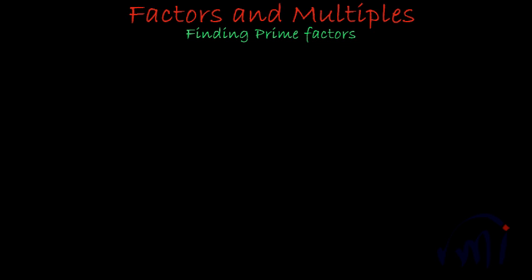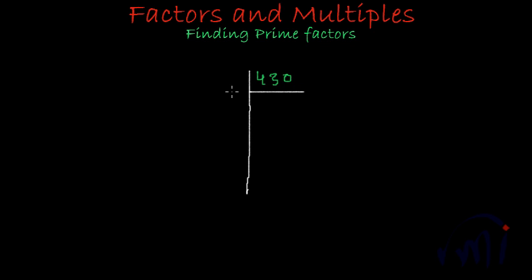Here we are going to learn one more method of finding the prime factors. We will learn this method using one more example, and here let's try to factorize 430. I'll draw this long line and then a line perpendicular to this. Now I'll think about the smallest prime number which can divide this number.